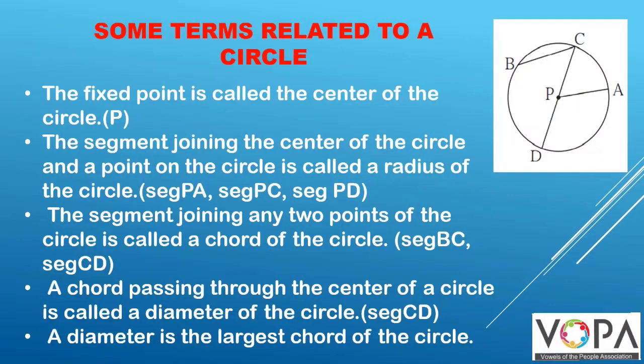Let us learn some basic terminologies related to a circle. The fixed point is called the center of the circle. In this figure, P is the center of the circle.